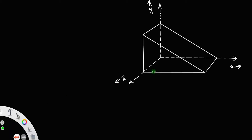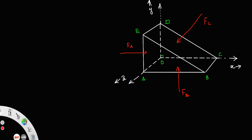Let us name all the vertices: let them be A, B, C, D, E, and this angle will be 90°. Let there be three forces — the force on the face E-D-A, let it be F_A; the force on the bottom face A-B-C-O, let it be F_B; and another force on the slanting face. Let the length EA be dy, AB be dx, and the slanting length EB be ds, with this angle being theta.